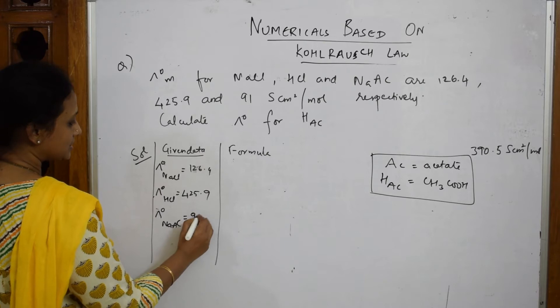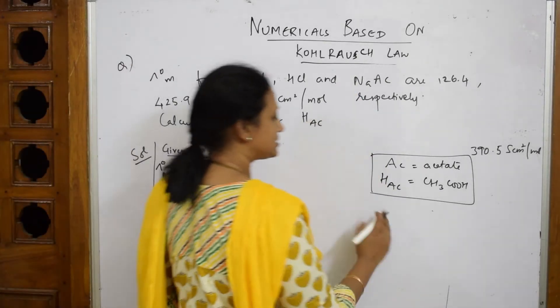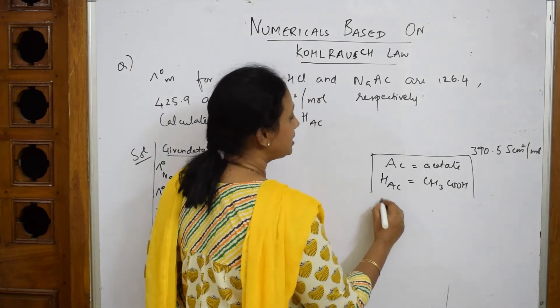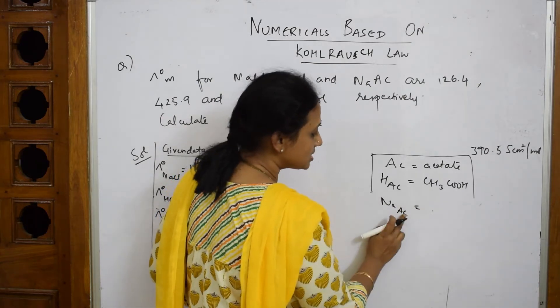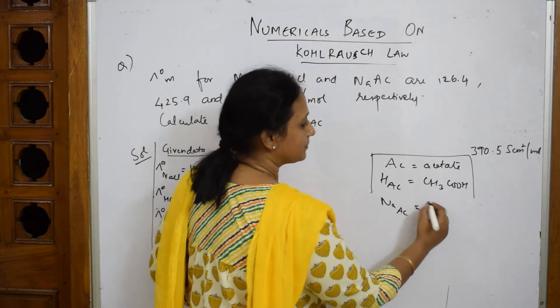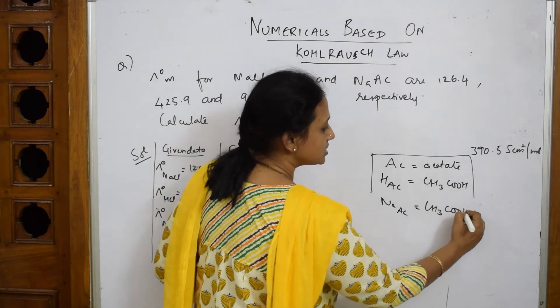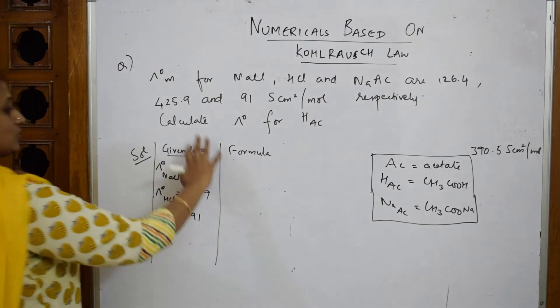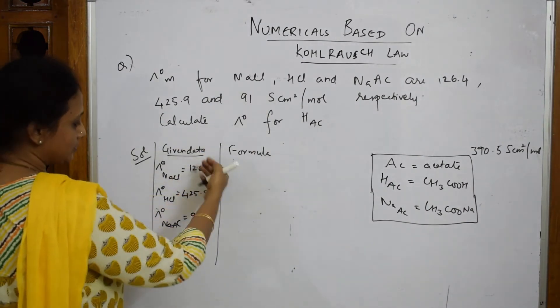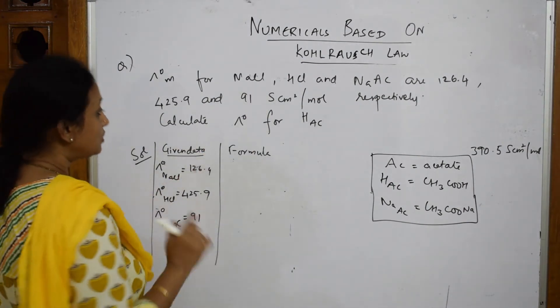Lambda not for NaAc - now you will tell me what is NaAc? NaAc is sodium acetate. It is CH₃COONa. Remember this. Lambda not for NaAc is 91, all are siemens centimeters square mole inverse. There's no place, I'm not writing it.